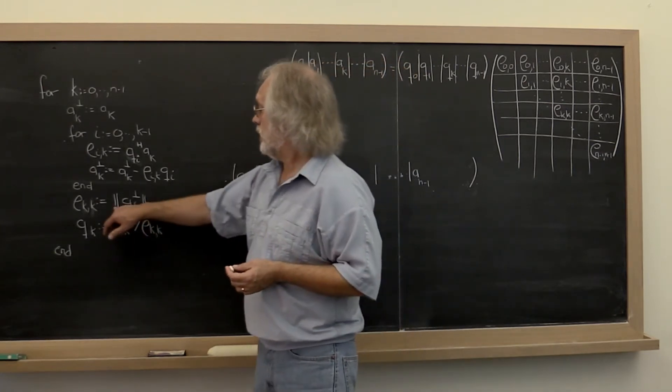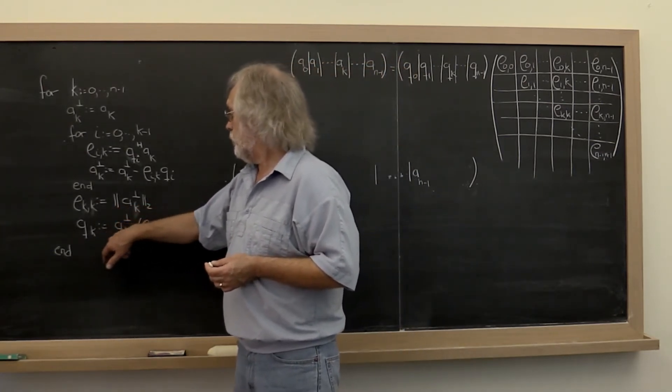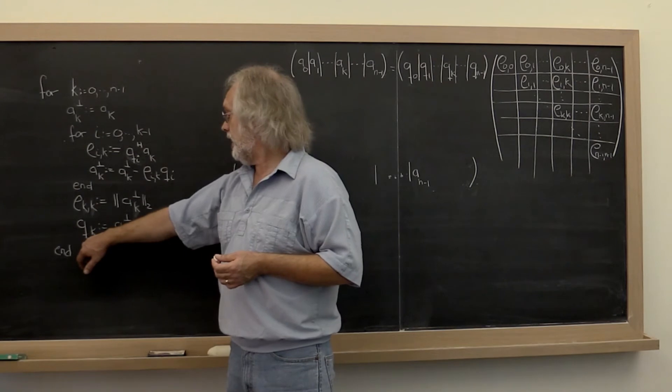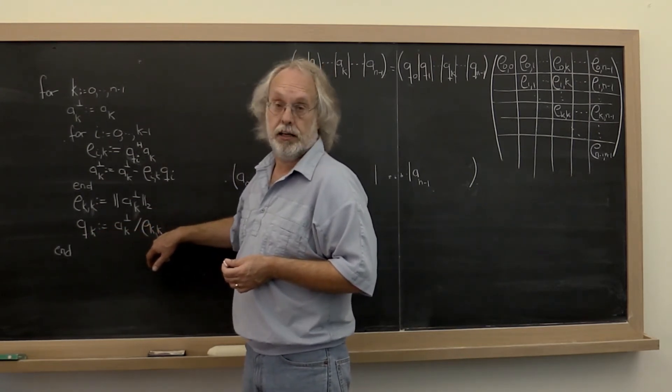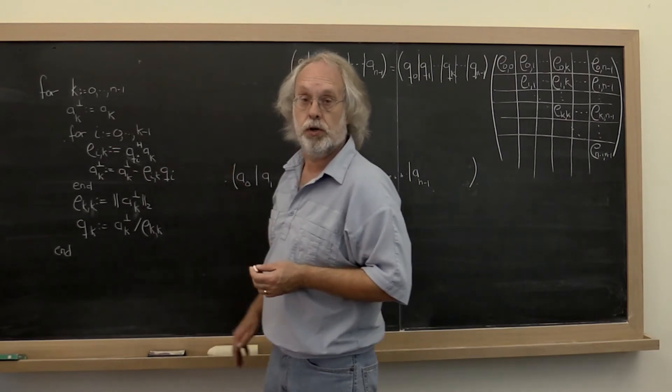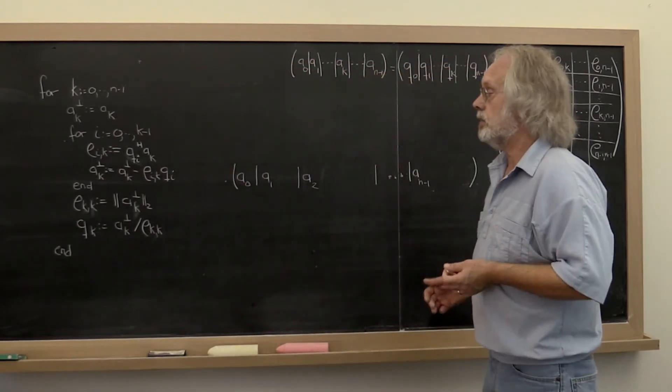At that point we can compute its length and then we can compute the next q sub k by taking that component and dividing it by its length. And then we move on to the next column.